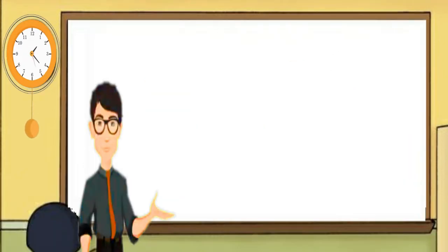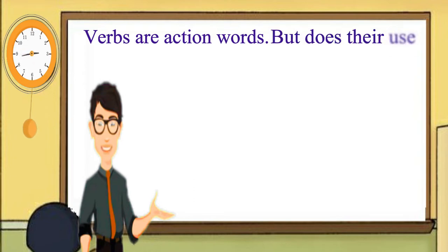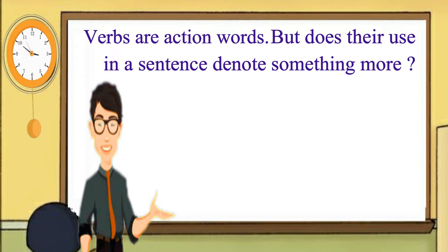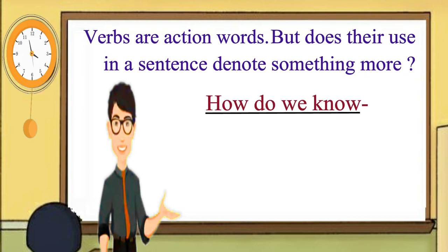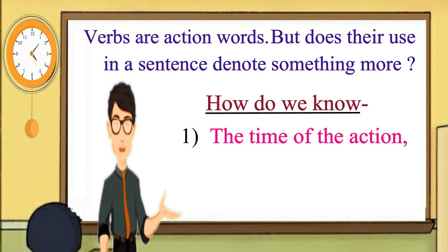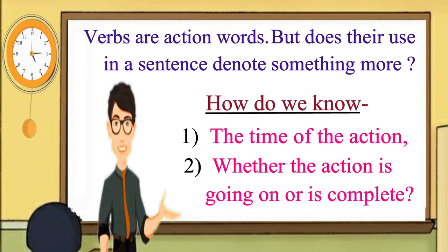We all have learned that verbs denote action. They are action words in the sentence. But don't they denote something more? By looking at the verbs, can we know about the time of the action referred and also whether the action was complete or still going on at the time of speaking? Let us see.